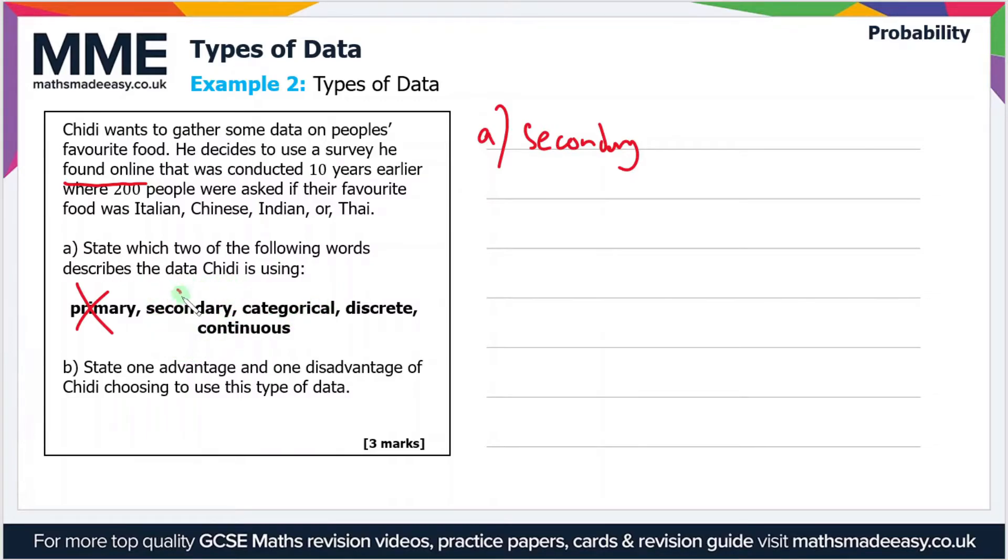And we'll move on to categorical data. But categorical data, otherwise known as qualitative data, is any form of worded data. So in this case, where people are asked if their favorite food is Italian, Chinese, Indian, or Thai, that is worded data, so it's categorical.